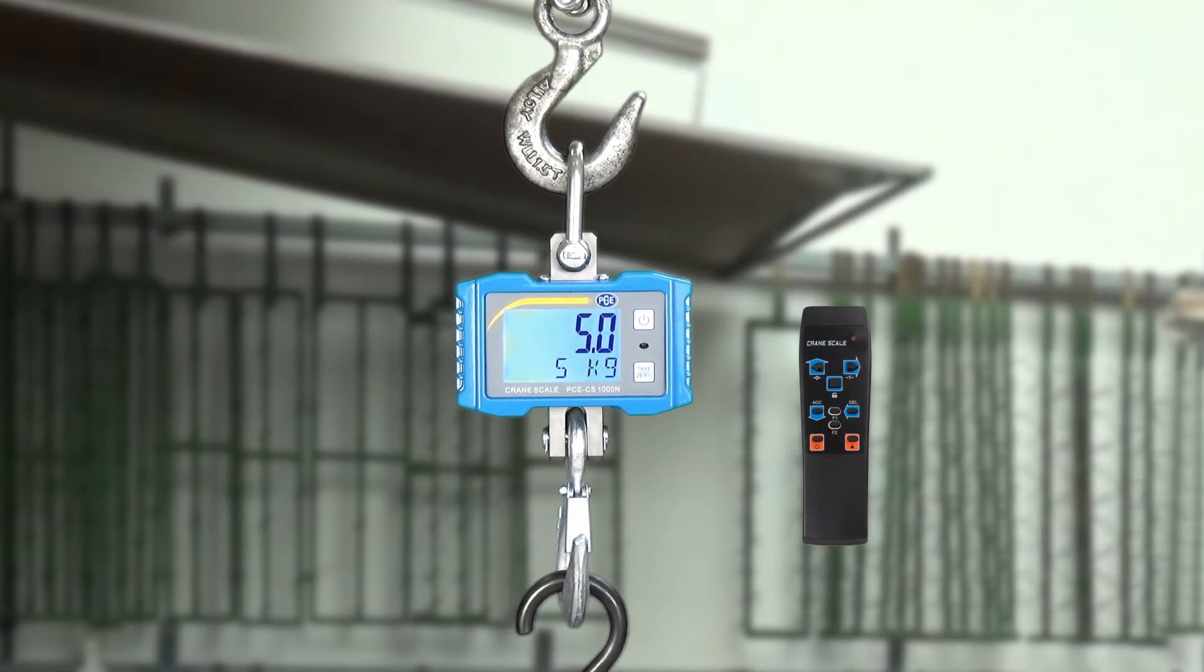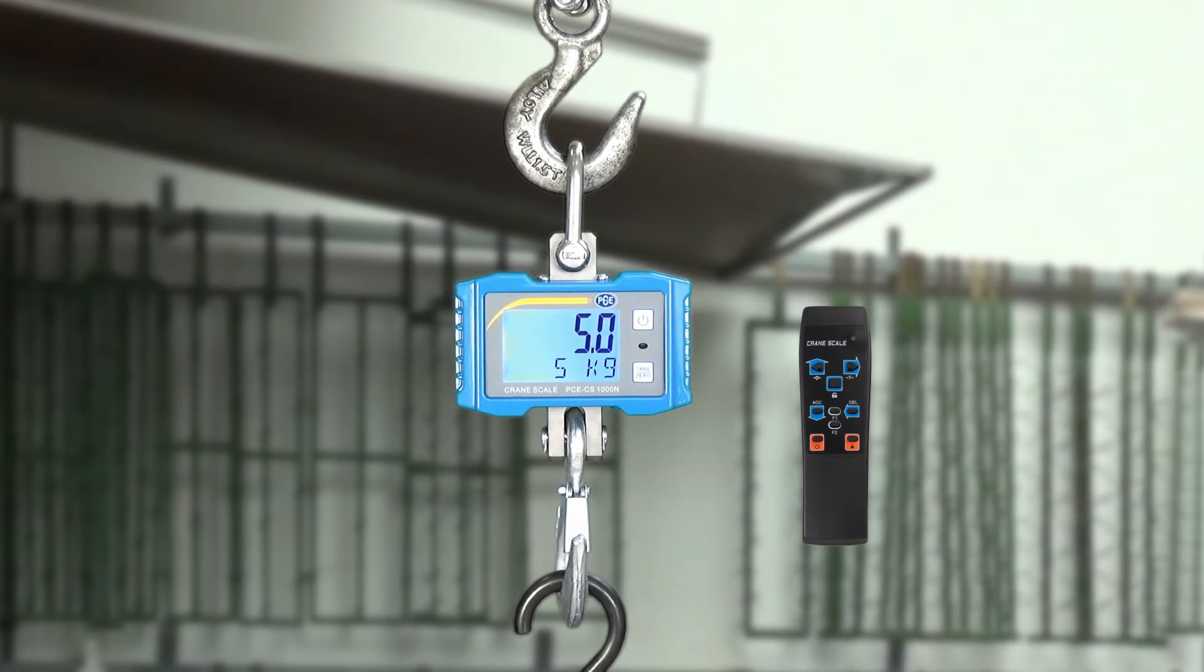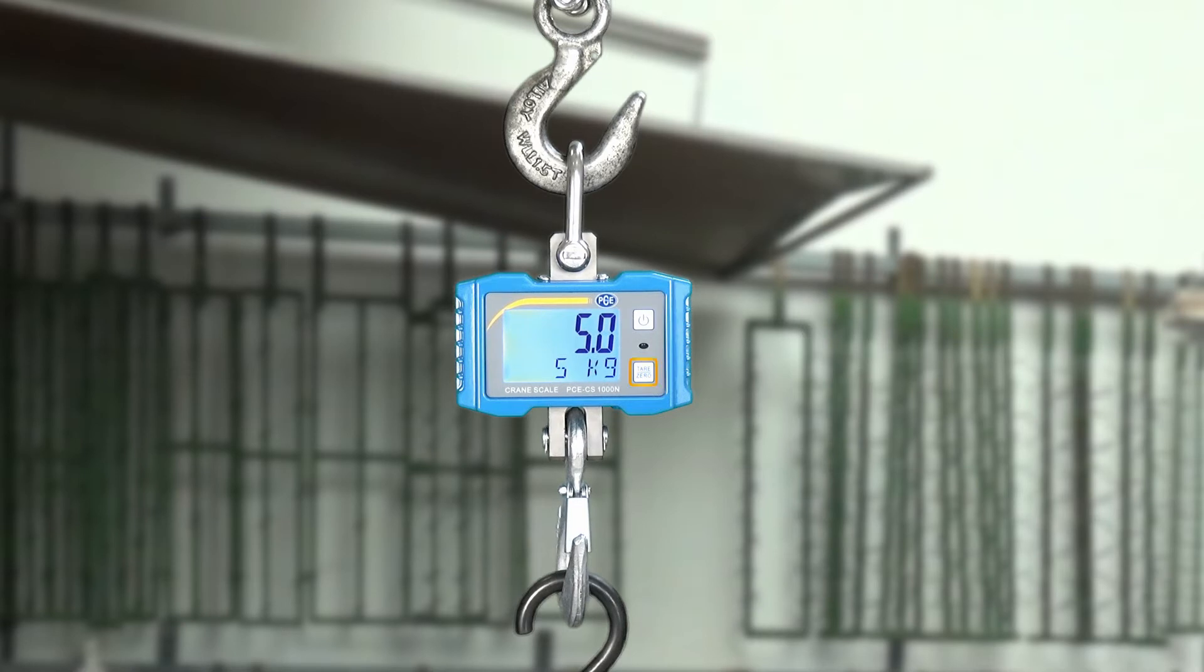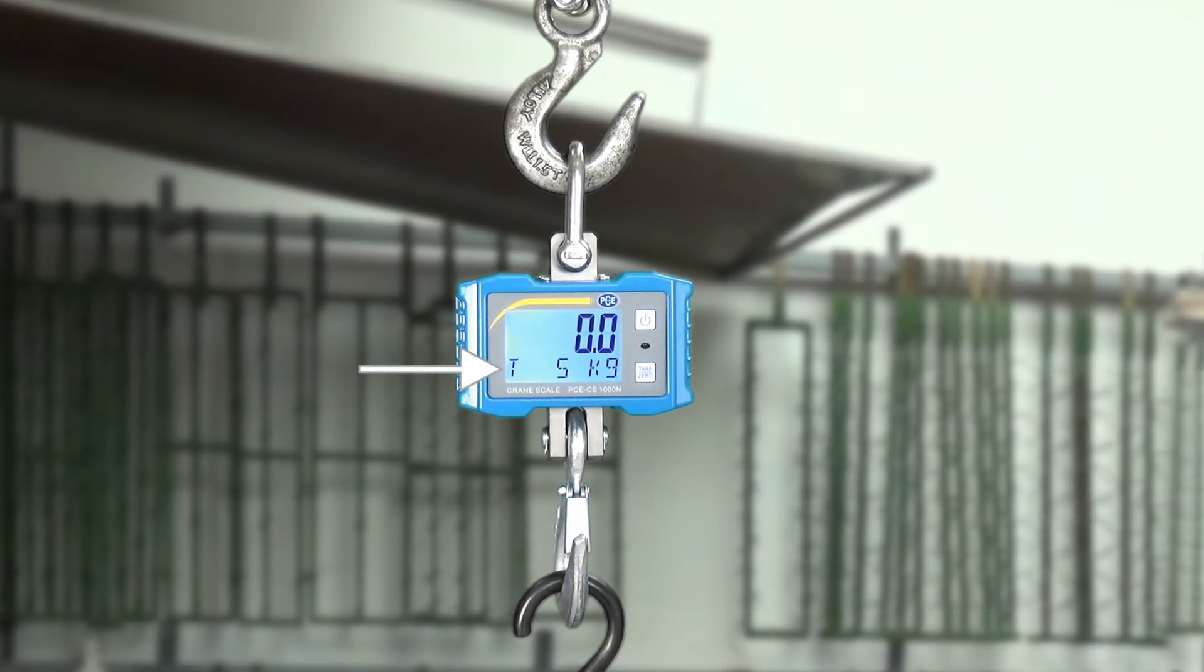Let's come to the explanation of the Tare and zero. A short press of the Tare button. Appears left in the display area, a T for Tare. And the above weight of the 5 kilogram disappear, and a 0 appears.